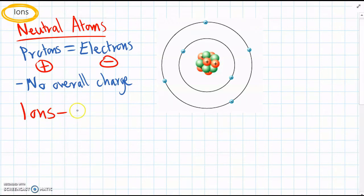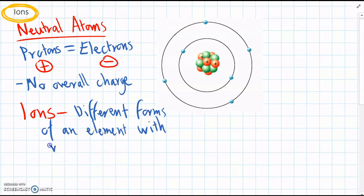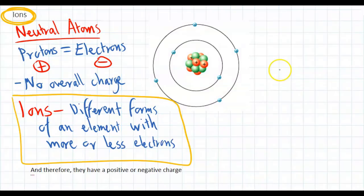So ions are different forms of an element with more or less electrons. And since they've either got more or less electrons than normal, then ions are going to have either a positive charge or a negative charge overall. So neutral atoms have no charge. Ions have a positive or a negative charge overall.